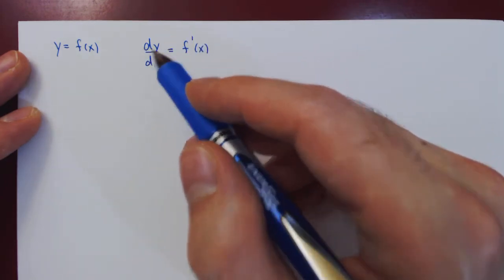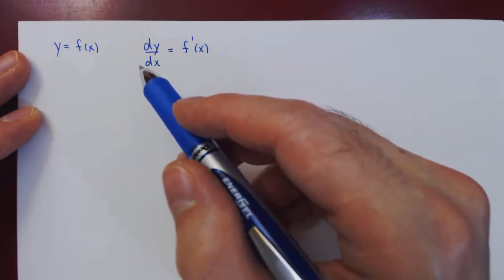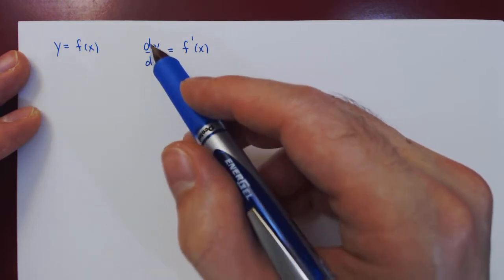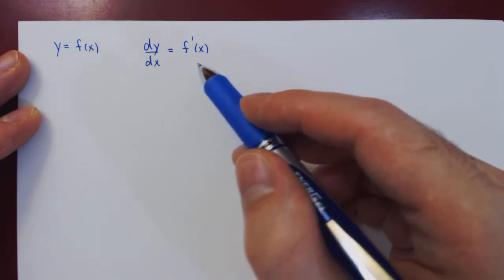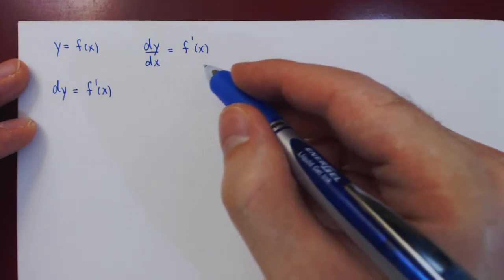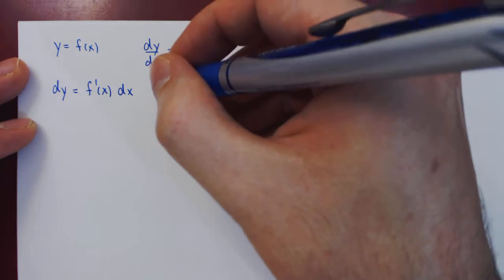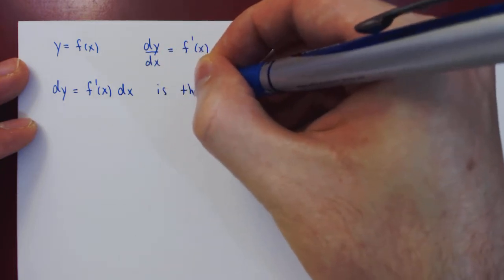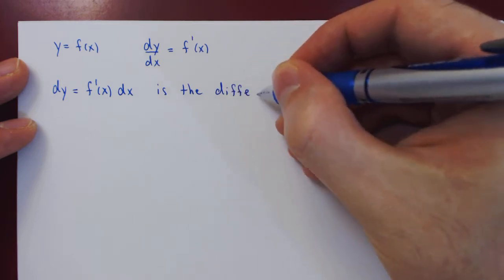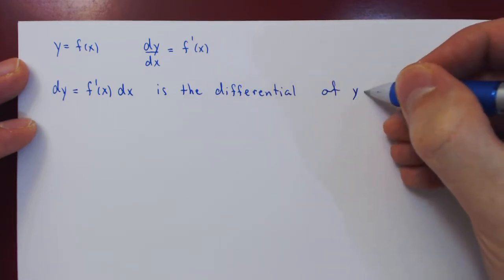We can view dy and dx as separate quantities, dy being an infinitesimal change in y, dx being an infinitesimal change in x. So we can isolate dy by multiplying both sides by dx. So we have dy, an infinitesimal change in y, equals the derivative of the function times an infinitesimal change in x. And dy is what we call the differential of the function y equals f of x.